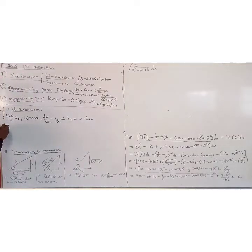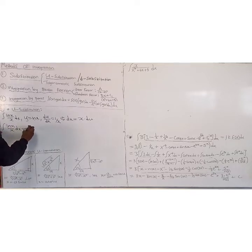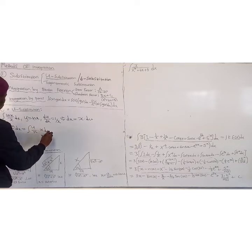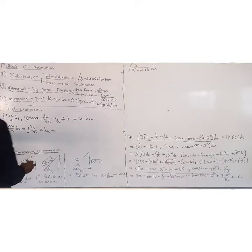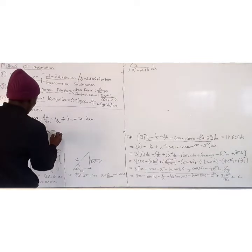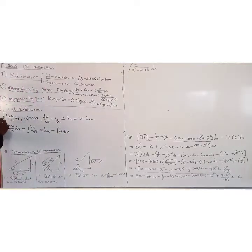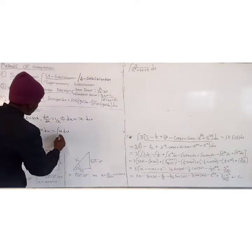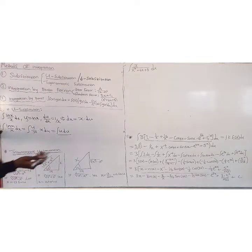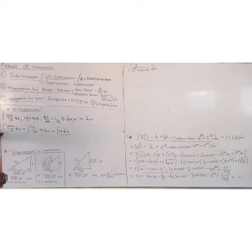So the integral of ln(x) over x dx can be written as the integral of u over x multiplied by x du. In this case, x cancels x, and we have transformed this integral into a simple integral where we can use the law. That's what u-substitution does.